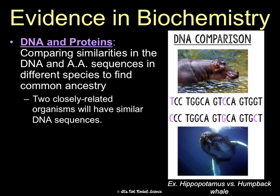Humans are 98.6% identical to chimpanzees in terms of our DNA, which is pretty remarkable. We're only 50% genetically identical to a banana. So that suggests we're much more closely related to chimpanzees than to bananas, and we have a much more recent common ancestor with chimpanzees.